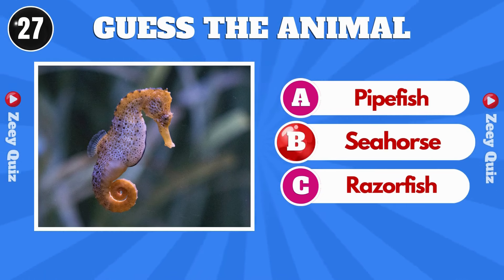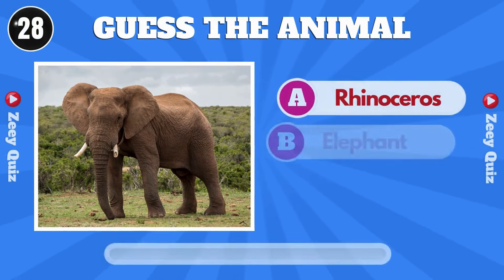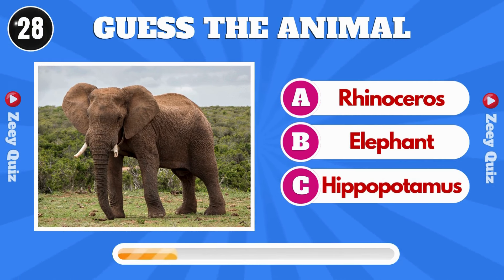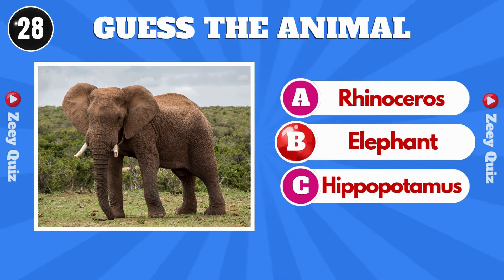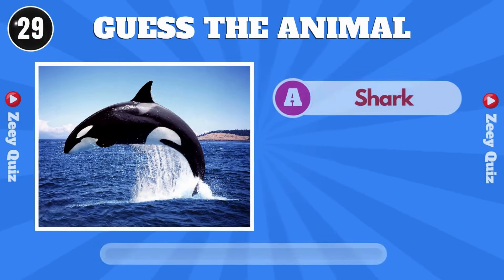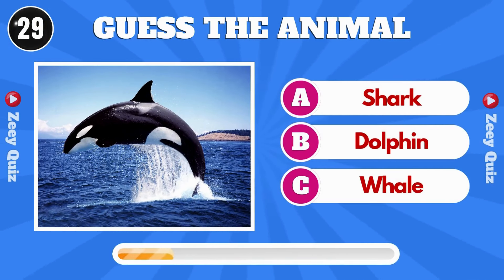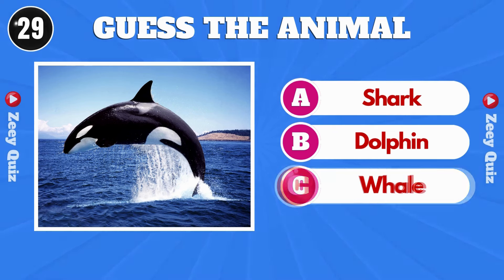Choice B, Seahorse. Choice B, Elephant. Choice C, Whale.